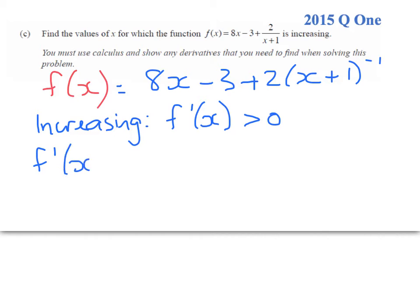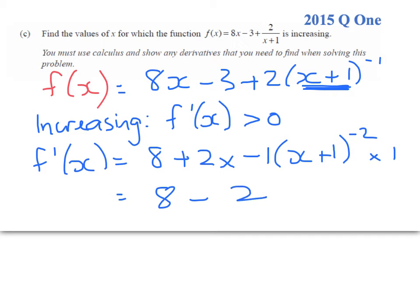So we start by finding the gradient function, which is 8 plus 2 times negative 1, (x + 1) to the negative 2, and the gradient of the inner function, applying the chain rule, is just 1. So we get the derivative function is 8 - 2/(x + 1)² . And we want to have that being strictly greater than 0. I'm going to do the working for this on the next slide.